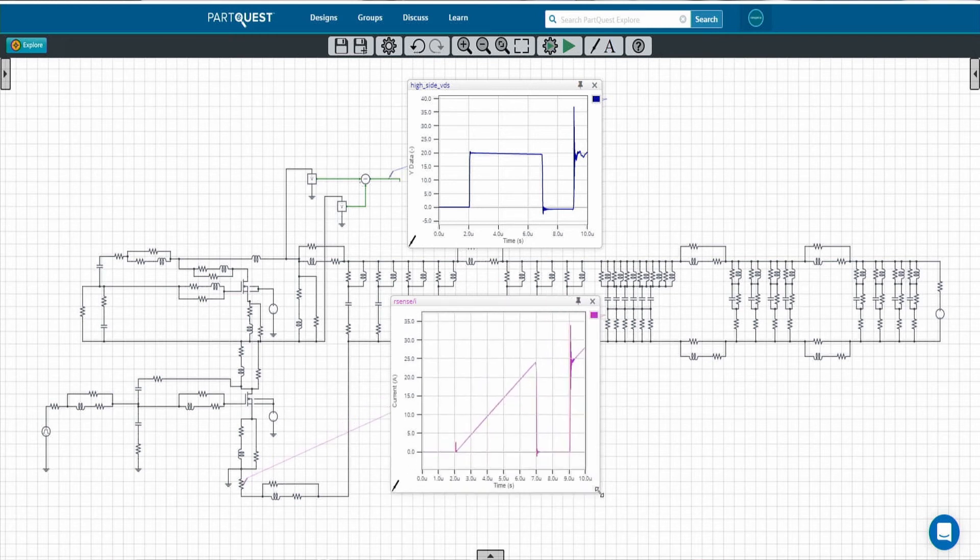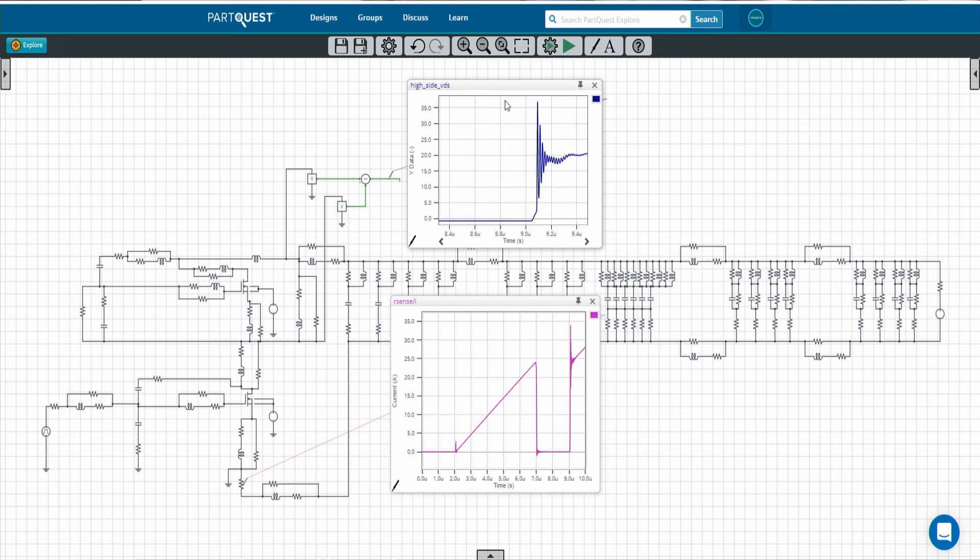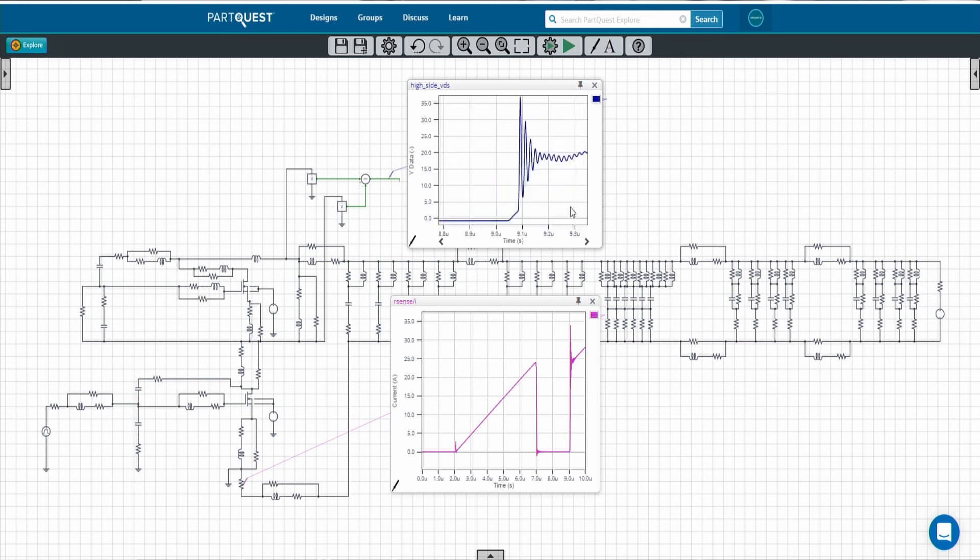As we saw in the double pulse measurement, we are interested in the second turn-on event, which is this bit. Here we can see the high side VDS waveform oscillating, as in the measurement, at something around 36 volts, and here we can see the current waveform.